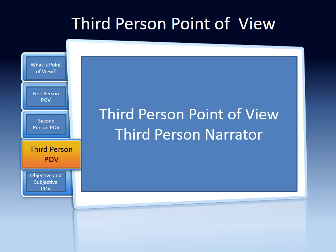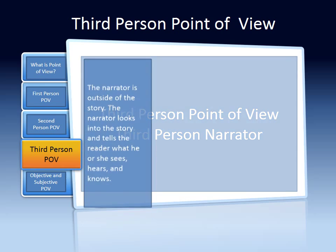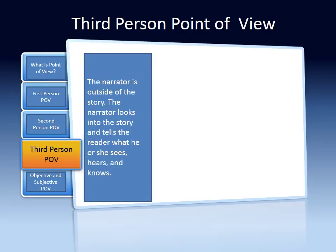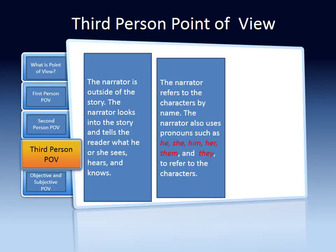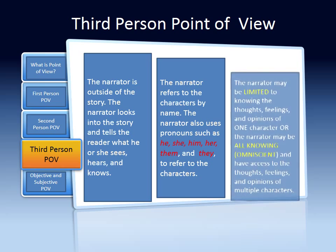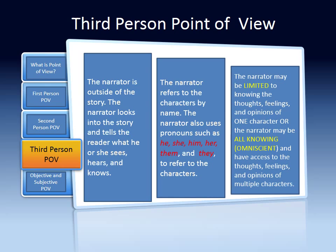Let's examine third-person point of view. In third-person point of view, the narrator is outside of the story. The narrator looks into the story and tells the reader what he or she sees, hears, and knows. The narrator refers to the characters by name. The narrator also uses pronouns such as he, she, him, her, them, and they to refer to the characters. The narrator may be limited to knowing the thoughts, feelings, and opinions of one character, or the narrator may be all-knowing — omniscient — and have access to the thoughts, feelings, and opinions of multiple characters.